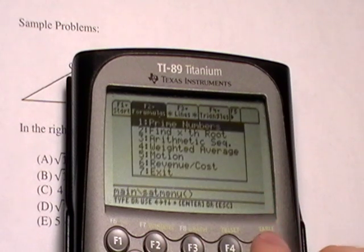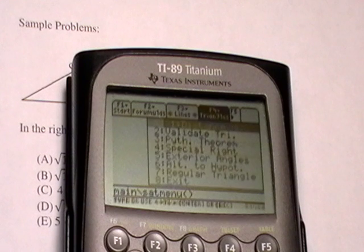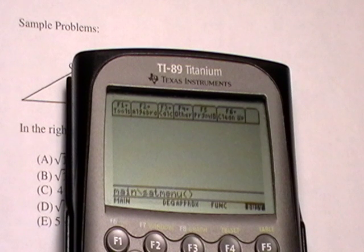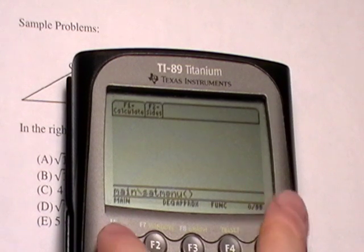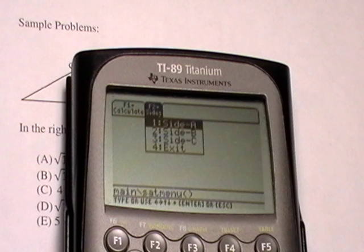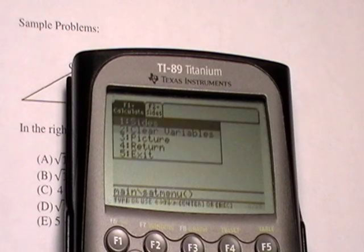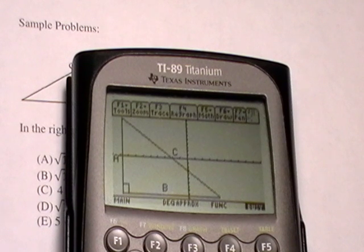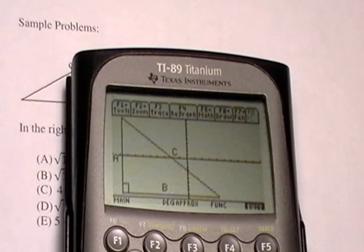Then you want to navigate to the triangles menu and select the Pythagorean theorem function. You'll notice there are two tabs here: calculate and sides. Just to give you an idea of what the picture should look like, just a basic right triangle to show you where the variables go.